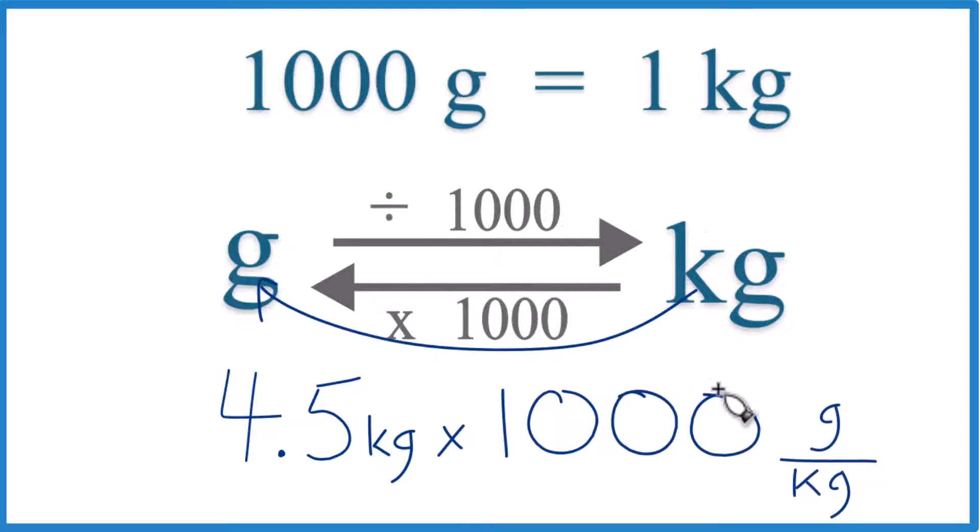That's 1000 grams per kilogram, just like our conversion factor. When we multiply, we have kilograms on the top and the bottom. They cancel out, and we're left with grams.